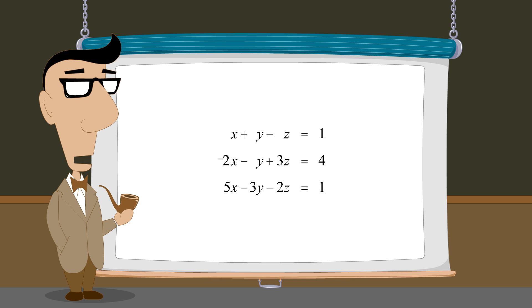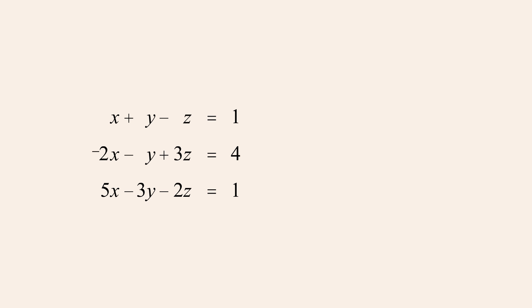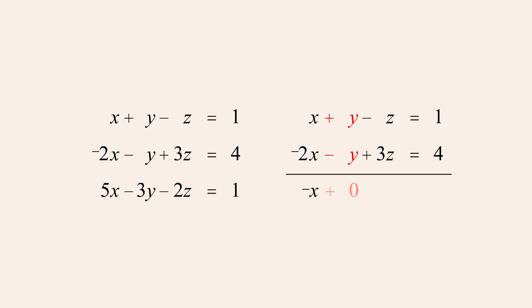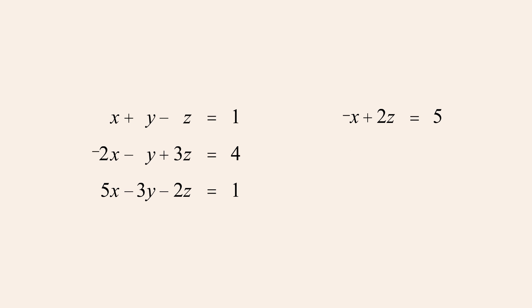Now let's see how elimination and substitution can be used to solve systems of three equations in three variables. To solve a system of three equations in three variables, we start by selecting two of the equations and use the elimination method to eliminate one of the three variables. For instance, let's use the first two equations and eliminate the variable y. In this example, we can eliminate y without multiplying either equation by a constant. Adding the equations eliminates y, giving us an equation in only two variables, x and z. Now if we can create a second equation in these same two variables, we will have a system of two equations in two variables which can then be solved to find the values of x and z.